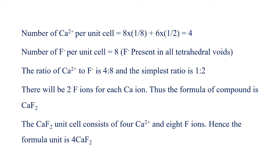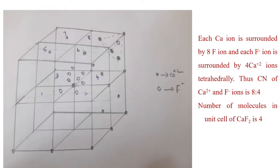The calcium fluoride unit cell consists of 4 Ca²⁺ ions and 8 F⁻ ions, giving 4 formula units of CaF₂ per unit cell. Therefore, the number of formula units per unit cell for calcium fluoride is 4, containing 4 calcium and 8 fluoride ions.